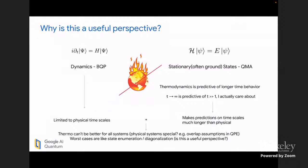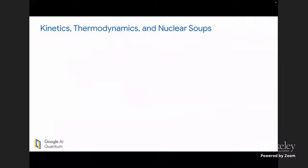And we know, of course, there are no free lunches. Thermo can't be better for all systems. Are physical systems special? I think this gets to some of the questions that Brian was asking. And in the worst cases, you expect to sort of have to enumerate all of your states or diagonalize, but is this actually a useful perspective? And I'm going to tease on that a little bit, but before I do, I'm going to make the chemical problems a little bit harder. We've talked a lot of our course about thermodynamics in the sense that these stationary states are predictive because we look around in our world and we notice that we're at some temperature.